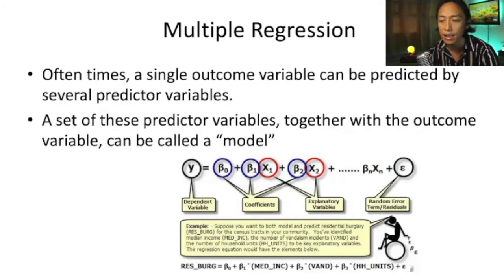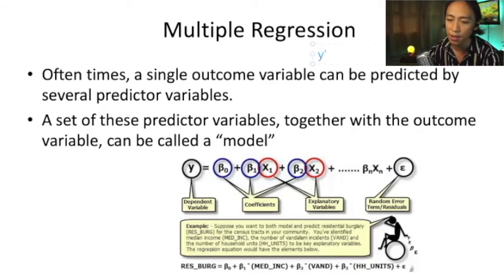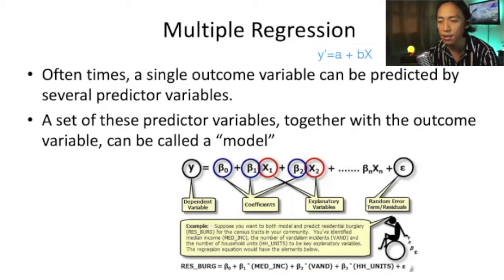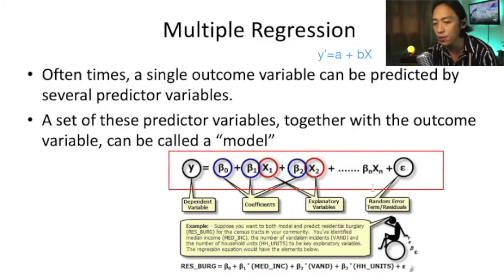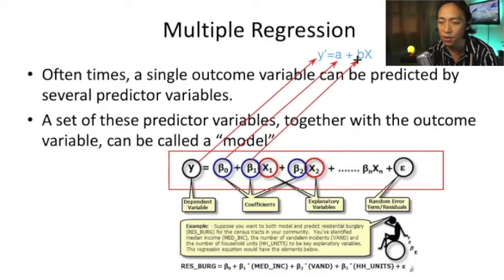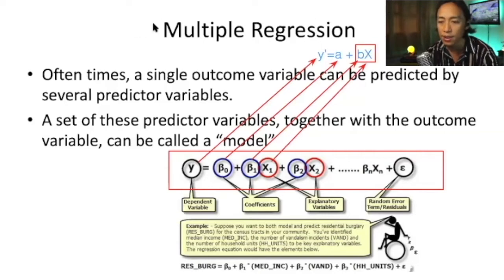In linear regression, we learned that it allows us to create a linear equation: the predicted value of y equals a plus bx. In multiple regression, it does essentially the same thing — it allows us to create a multiple regression equation for multiple predictors. So we have our predicted value of y, the intercept coefficient when x is zero, and the unstandardized coefficient representing the slope for the first variable.